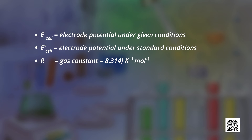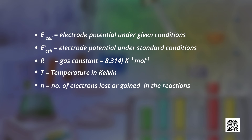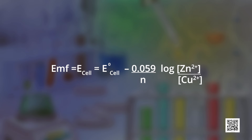Here, E° cell is the electrode potential under standard conditions. R is the gas constant taken as 8.314 J per Kelvin per mole. T is temperature measured in Kelvin. N is the number of electrons lost or gained in the reaction. F is the Faraday constant taken as 96500 Coulombs per mole. On substituting the values of R, T, and F, we can simplify the expression as: E cell = E° cell − (0.059/N) log([Zn²⁺]/[Cu²⁺]).